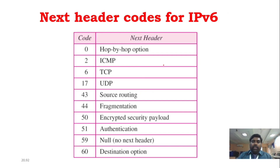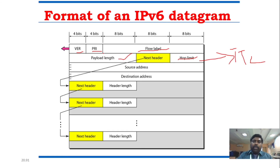The next header field contains codes that identify what follows. For example, the ICMP header code is 2, the TCP header code is 6, and UDP is 17. Whenever you go to the next header, this chaining of next headers is a new feature in IPv6.